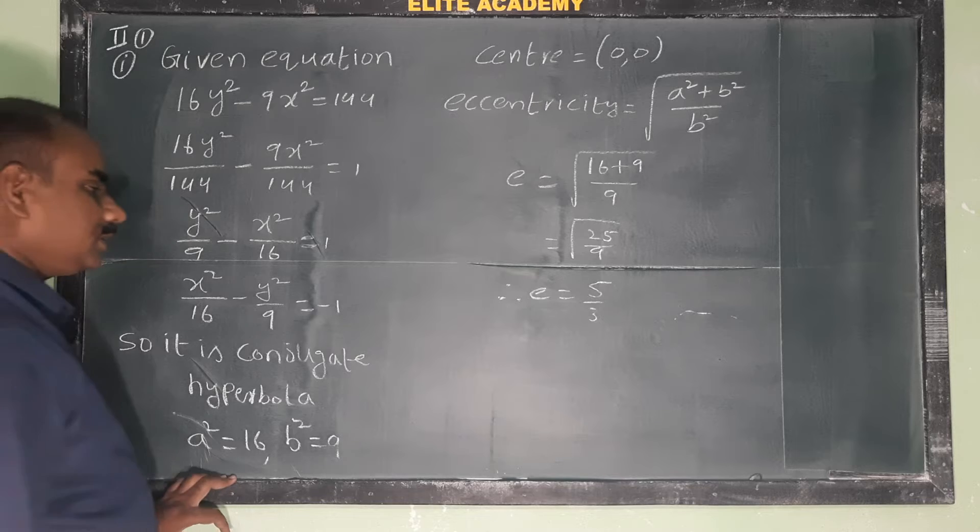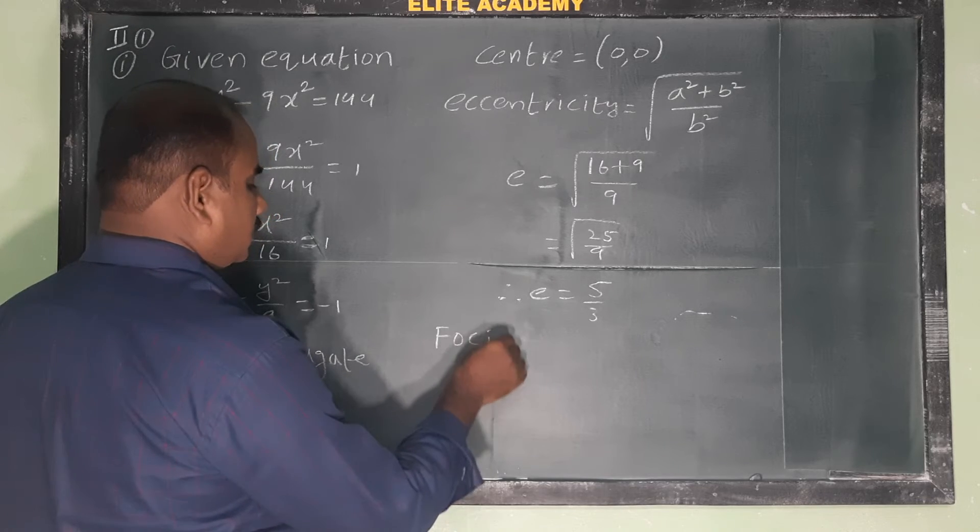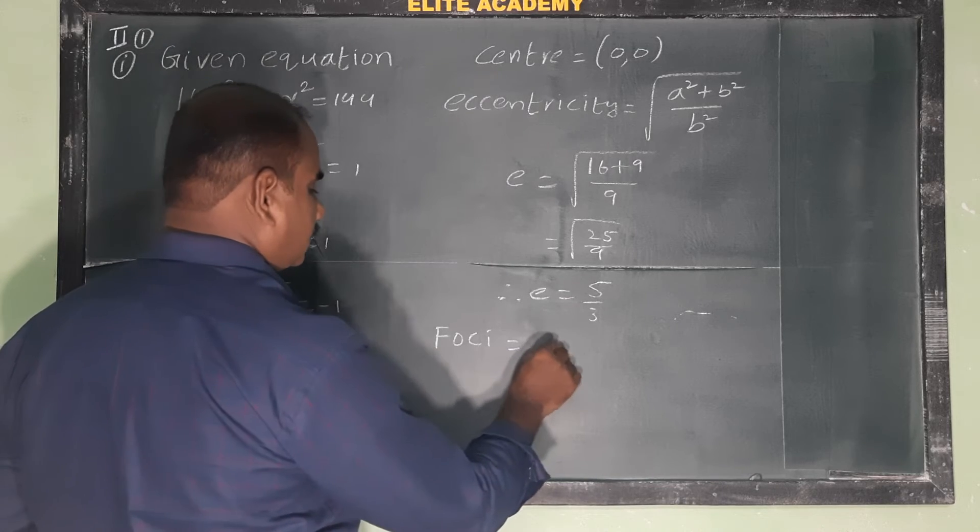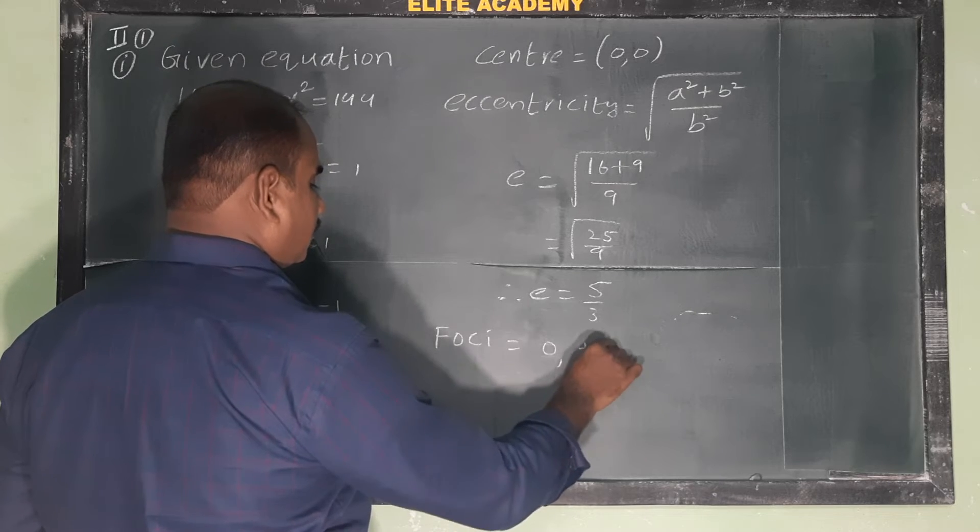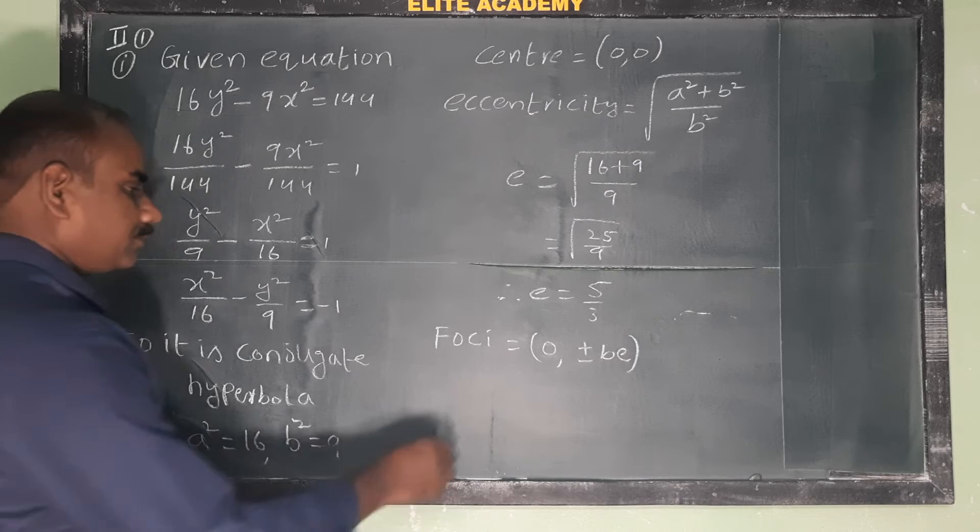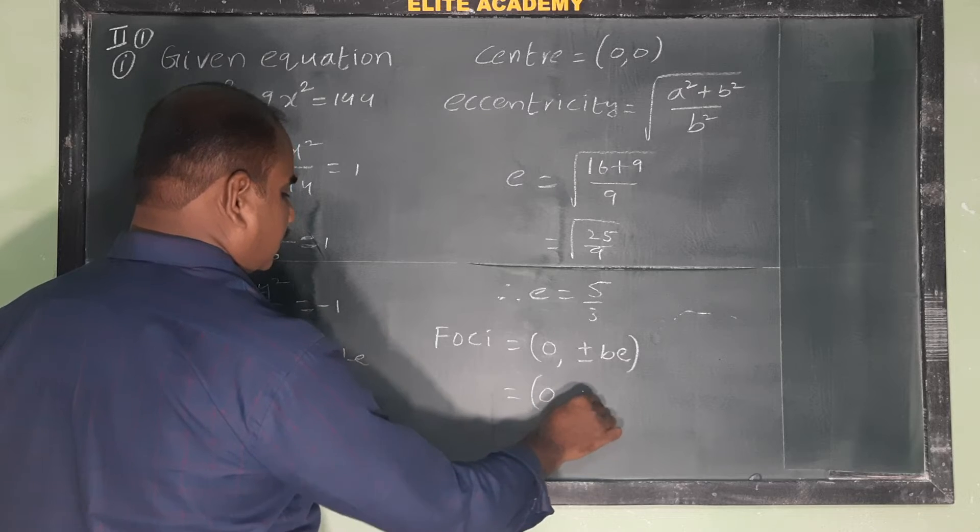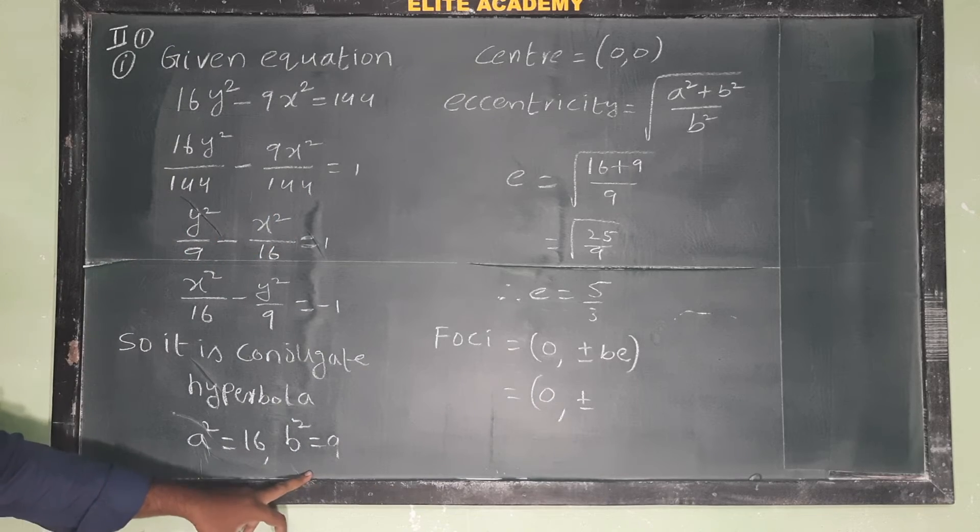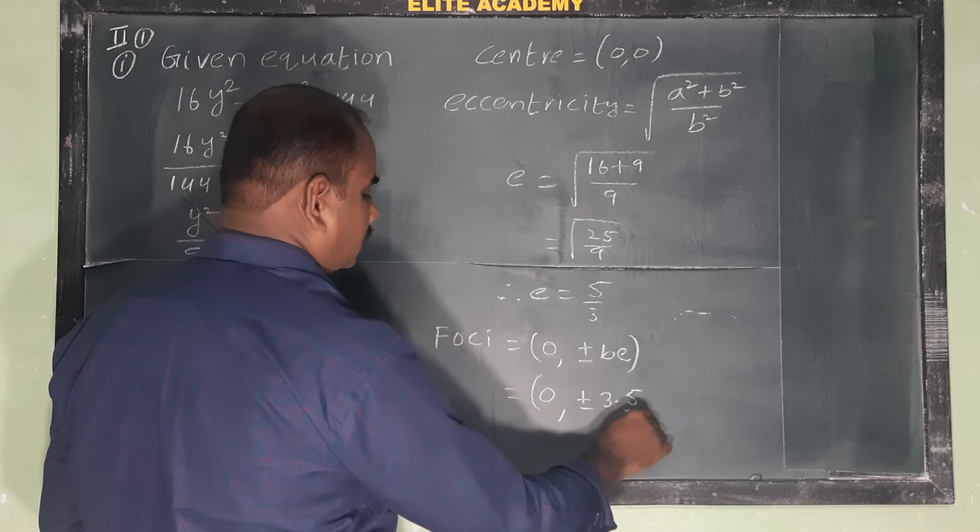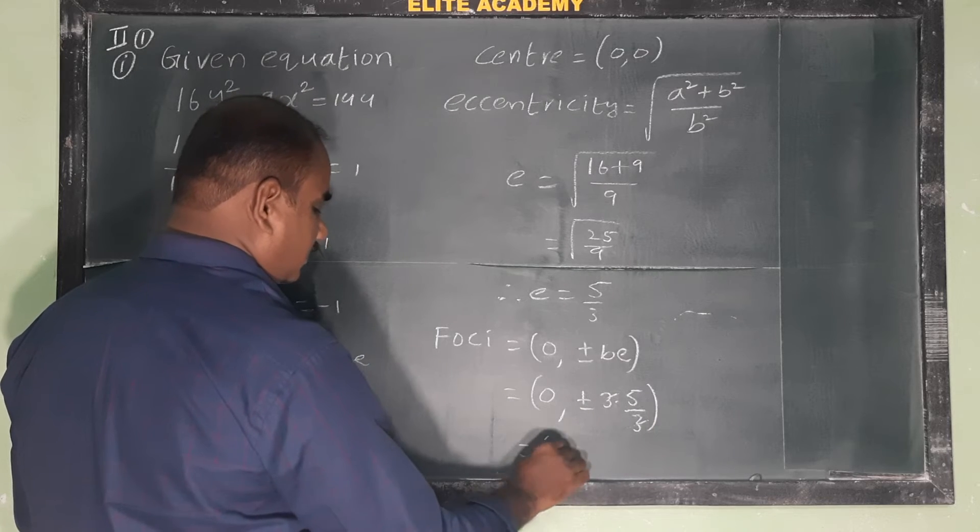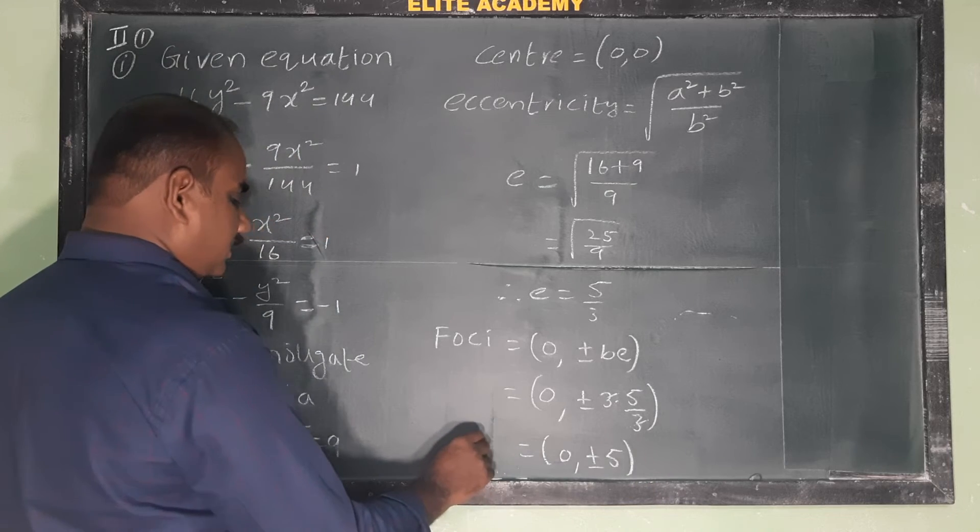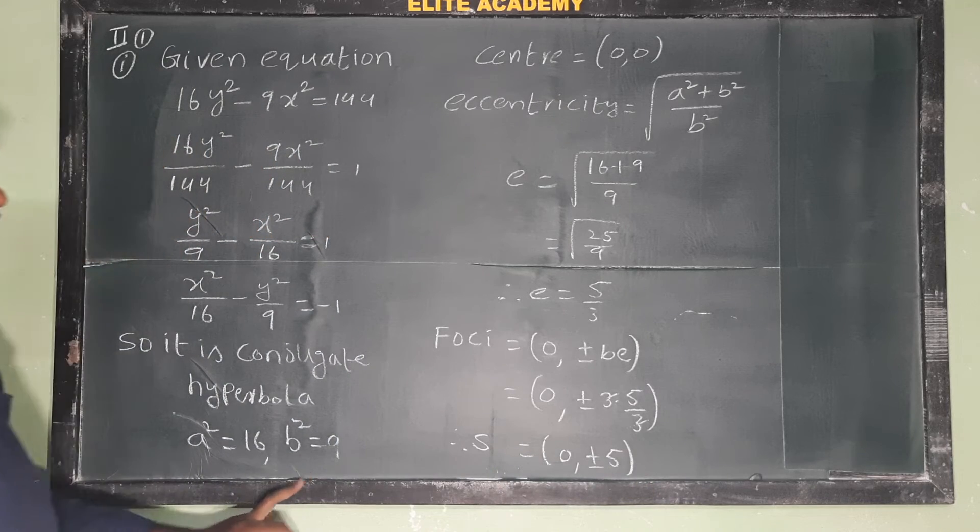Next, finding foci. For conjugate hyperbola, foci formula is (0, ±BE). Here b² = 9, so b = 3. BE = 3 × 5/3, the 3 cancels, giving us (0, ±5). These are the foci.